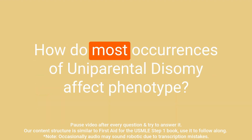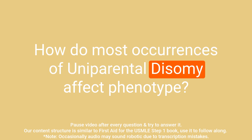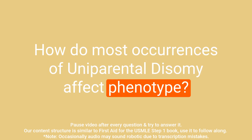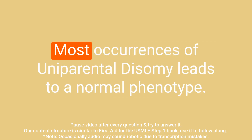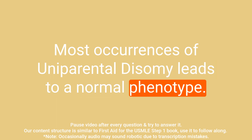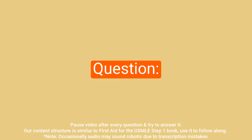Question: How do most occurrences of uniparental disomy affect phenotype? Answer: Most occurrences of uniparental disomy lead to a normal phenotype.